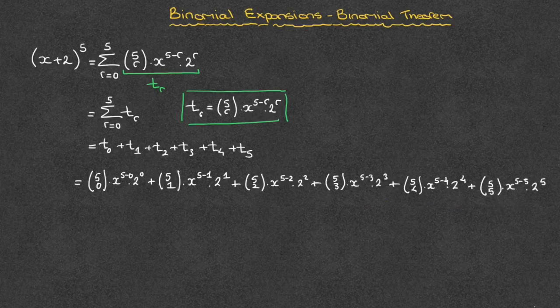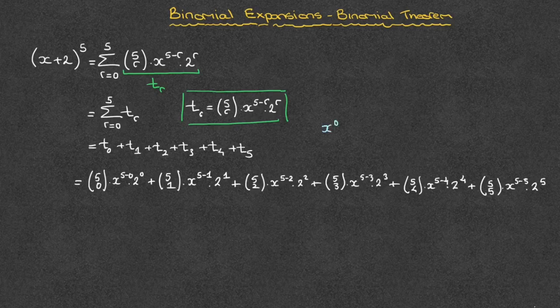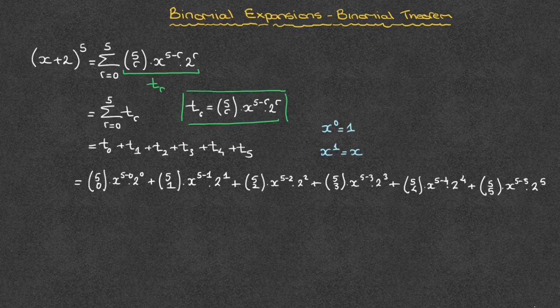But we can't stop there — we need to simplify each of these as much as possible. For that, we start by simplifying all of the powers of x, as well as calculating any powers of 2. It's worth keeping in mind that any number x raised to the power of 0 is equal to 1, so we can ignore any power of 0 completely. Also, any number x raised to the power of 1 is just equal to x, so we don't bother writing powers of 1. With those results in mind, let's simplify each of these terms.